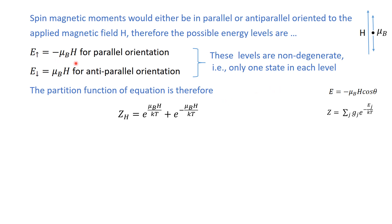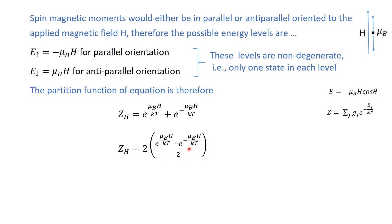Putting these values into the partition function, we have a relation where the first term is for the parallel orientation and the second term is for the anti-parallel orientation. Since there is no degeneracy, g_j equals one. Multiplying and dividing by two, the term in parentheses becomes the hyperbolic cosine of (μ_B H / kT). This is equation number three — the partition function Z_H in the presence of the applied magnetic field H.